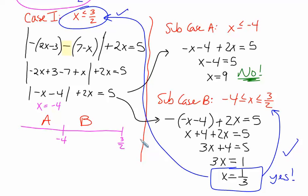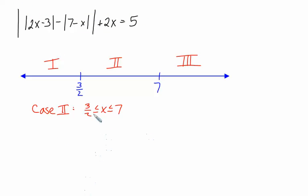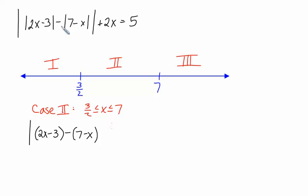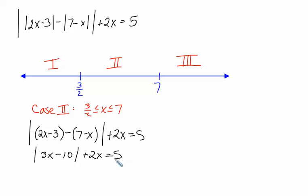Watch out if you have a nested set of absolute values — you need to examine subcases. Now let's turn our attention to case 2, where x is between 3/2 and 7. Picking x equals 4: the first absolute value is positive inside, so we remove those signs. The second absolute value is also positive, so we remove those signs too, keeping the negative out front. Cleaning up inside: 2x plus x gives 3x, and negative 3 minus 7 gives minus 10.